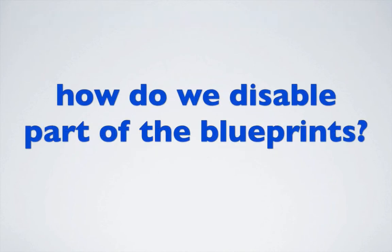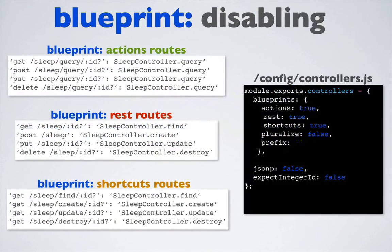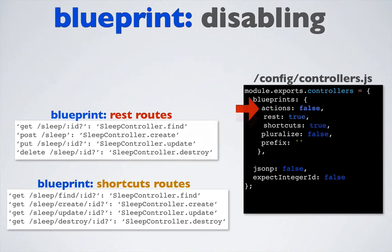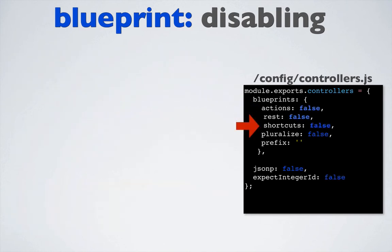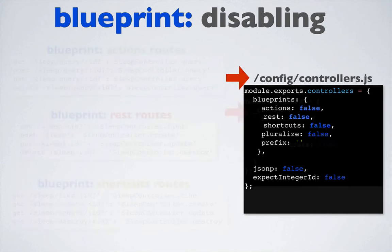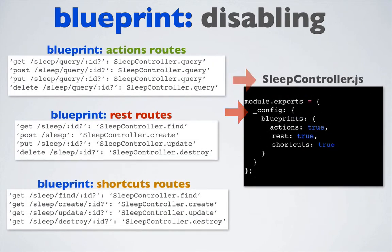So how do we disable parts of the blueprints? The blueprint routes and blueprint actions are completely configurable. They can be disabled simply by setting the values of actions, rest, and/or shortcuts to false in the config/controllers.js file. You can have even finer granularity by setting the same values in the _config object within each controller, which will override what is in the controllers.js file.